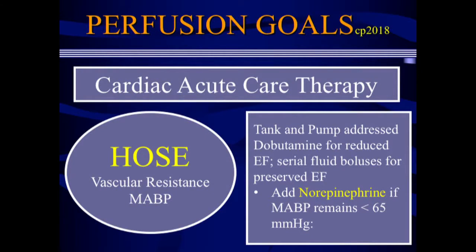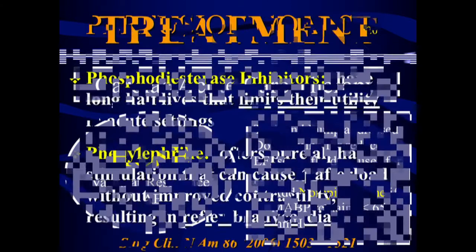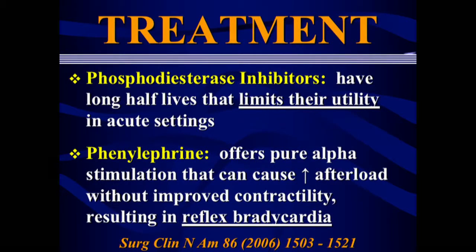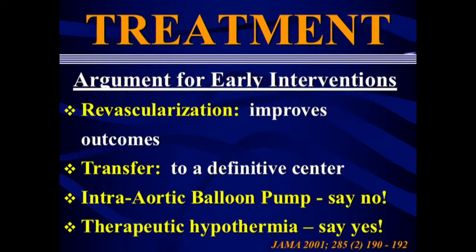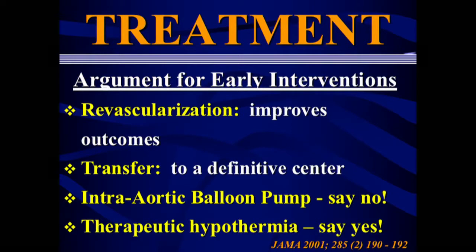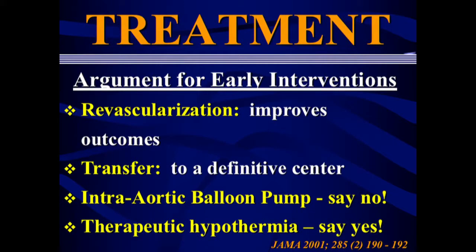Systemic vascular resistance — the hose — is all norepinephrine, our drug of choice for cardiogenic shock in 2018. Phosphodiesterase inhibitors like amrinone have a long half-life that limits their utility, and they're expensive. Phenylephrine causes unopposed alpha and can lead to bradycardia — avoid it. There is a strong argument for early intervention: revascularization improves ultimate outcome, though you can still have abject hypotension during revascularization. Intra-aortic balloon pumps — no. Therapeutic hypothermia post-arrest — yes.